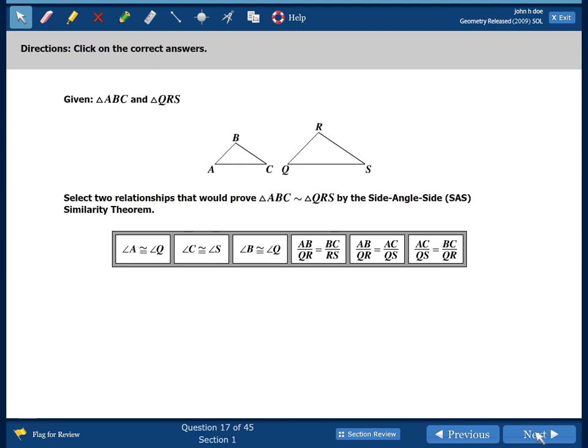Here's another one that deals with triangles. The keyword here is select two relationships that would prove the triangles are similar. Remember, this symbol right here means similar. Triangle ABC is similar to triangle QRS by side, angle, side.